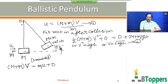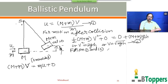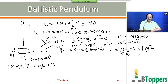Substituting the value of v from the energy equation into the momentum equation, if the bullet gets embedded into the block after the collision, the initial speed of the bullet before the collision is given by U = ((M + m) / m) × √(2gh). This formula holds good when h is less than or equal to L, where L is the length of the pendulum.